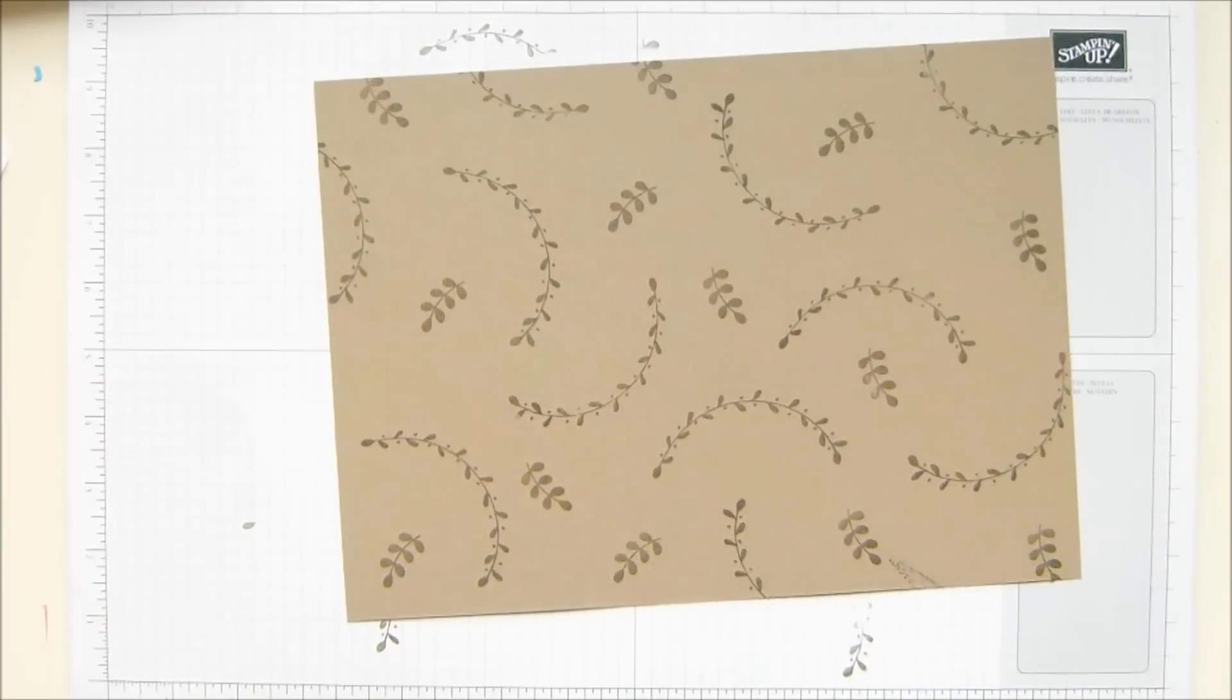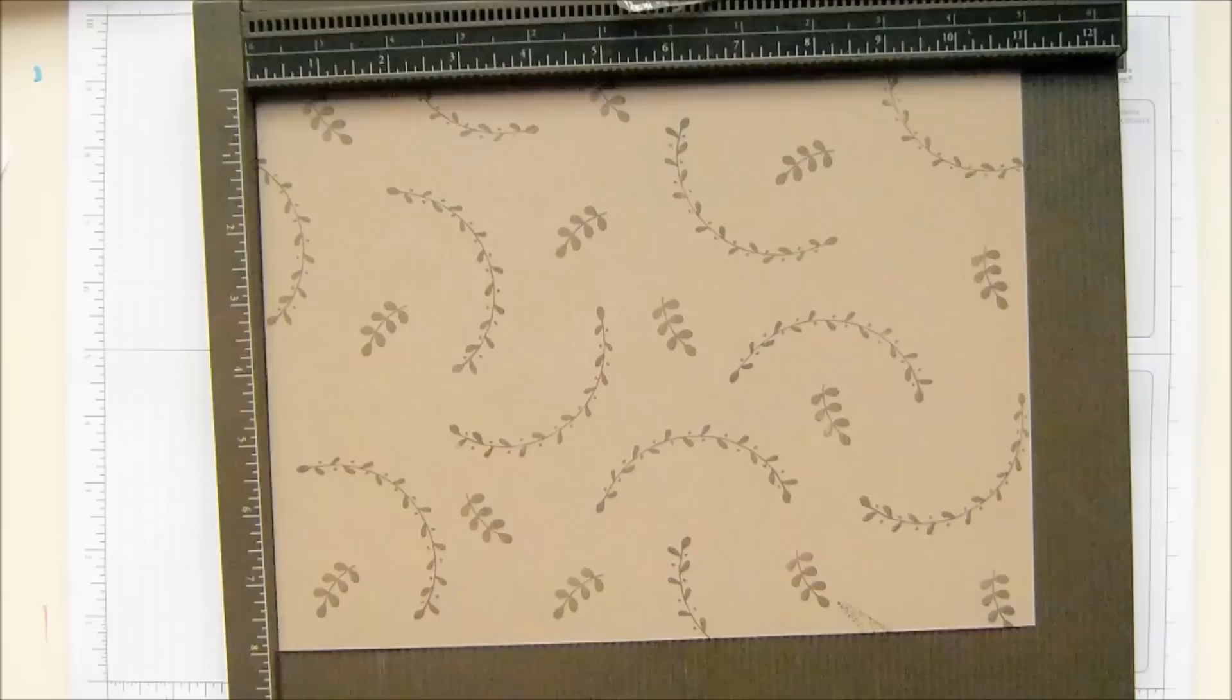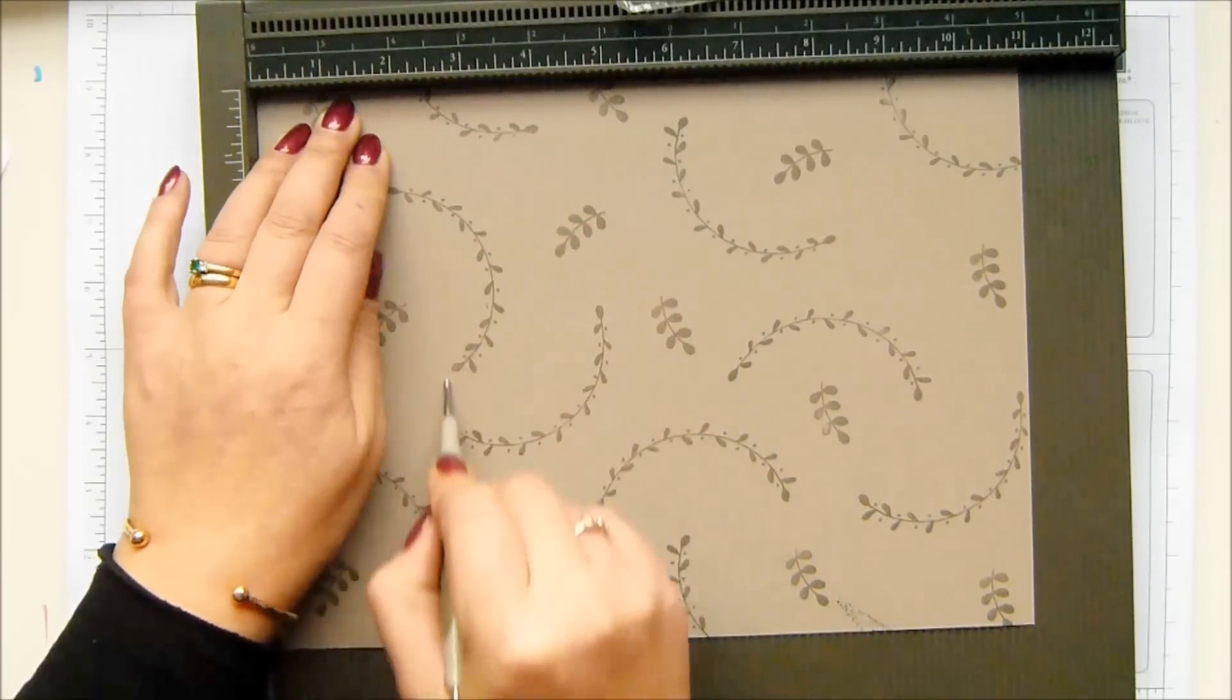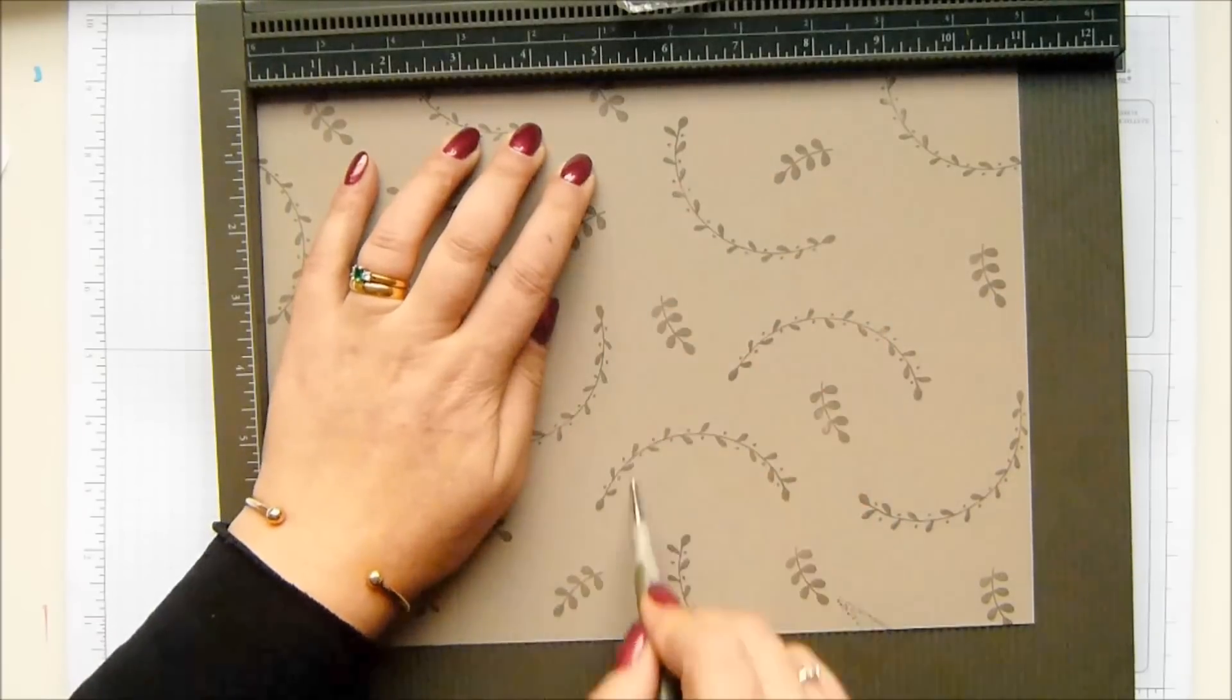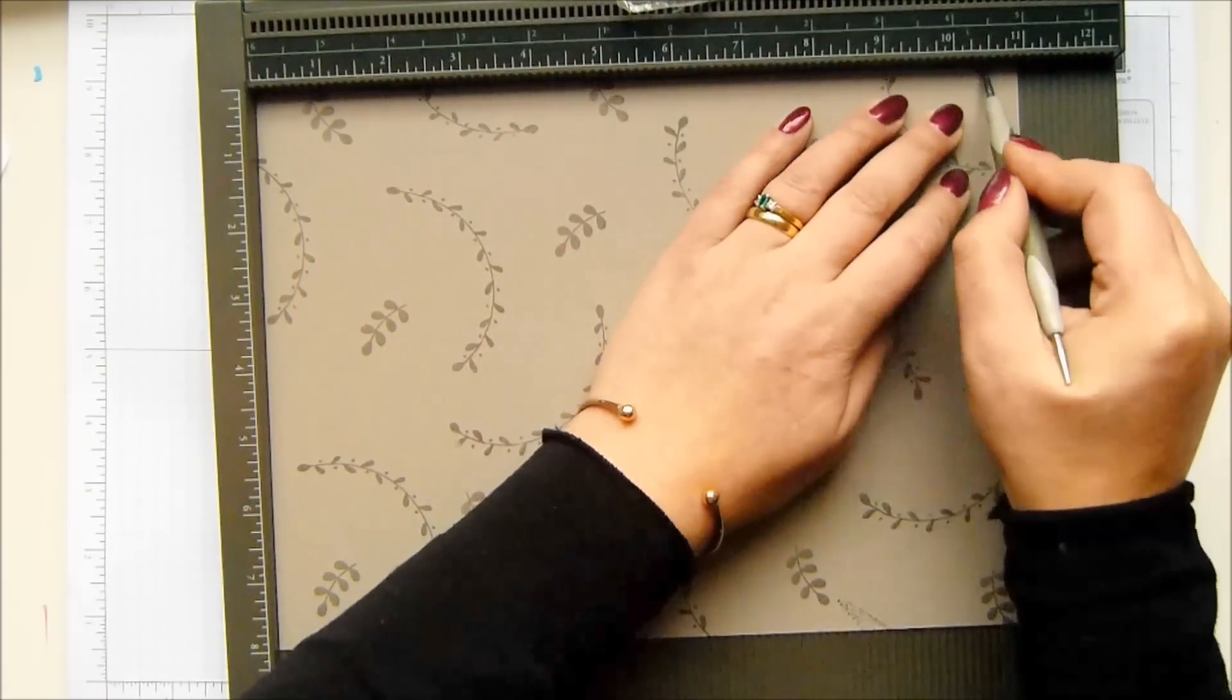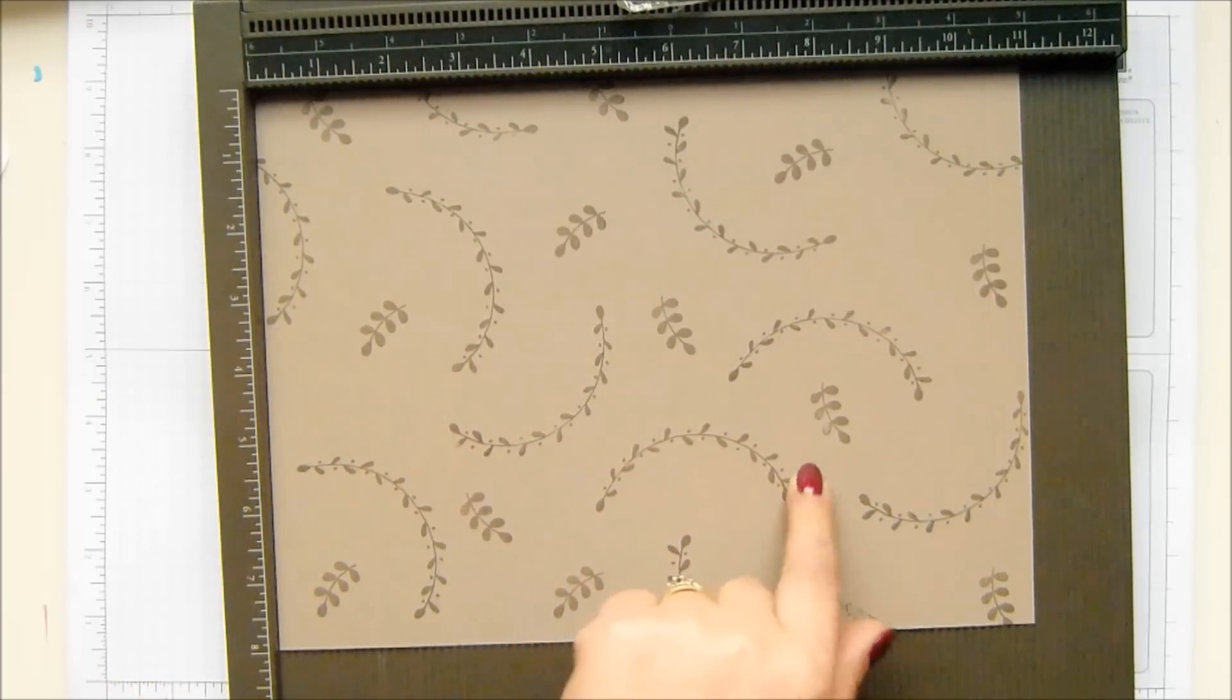Okay. Grab my scoreboard. Eight by 11, 20 by 28 centimeters. On the long side, we're going to do full scores first. Then we're going to do part scores. Score it at 2 and 5 eighths of an inch, 5 and a quarter, 7 and 7 eighths of an inch, and 10 and a half inches, which is 6 and a half, 13, 19 and a half, and 26.